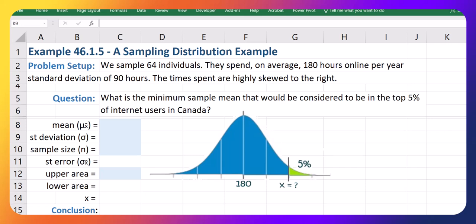In this video, we're going to look at how to solve for a sample mean value for a sampling distribution where we're given the area or the probability and we need to work backwards and solve for the sample mean.